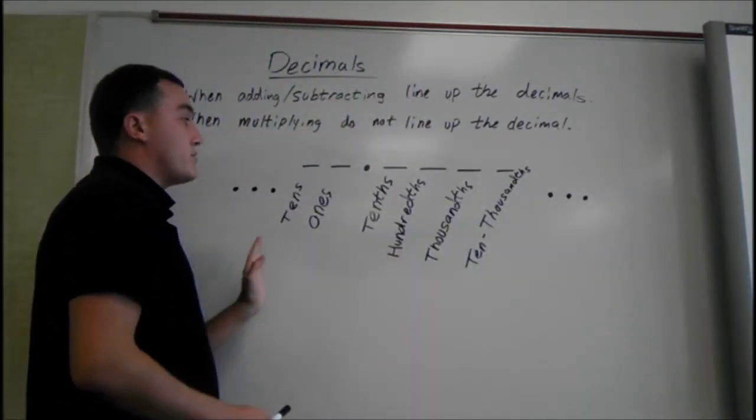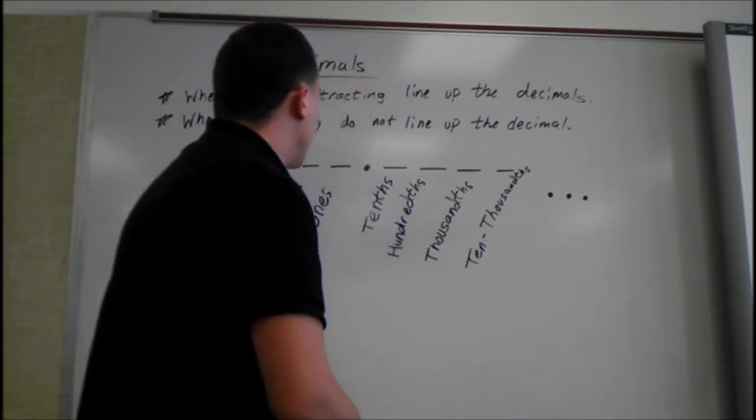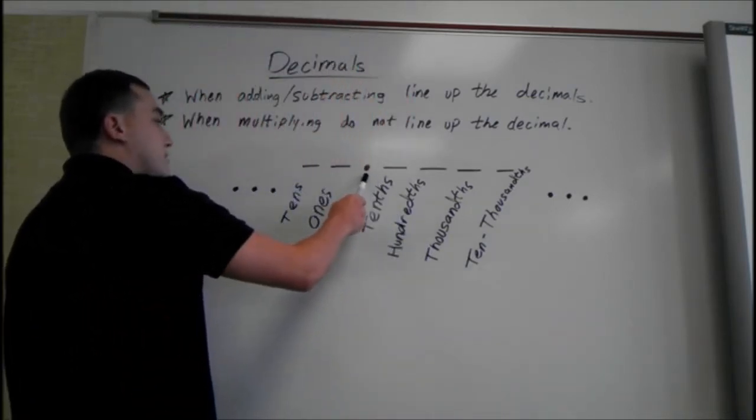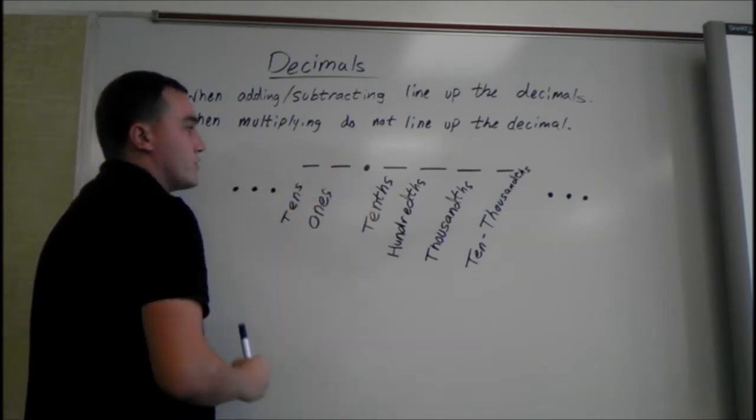Another thing you need to know is what the places are called, because that helps us convert them to fractions if we have to. After the decimal, we know the ones before. There's ones, tens, hundreds, thousands, so on and so forth.